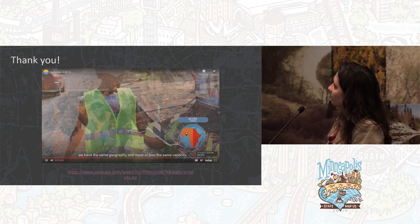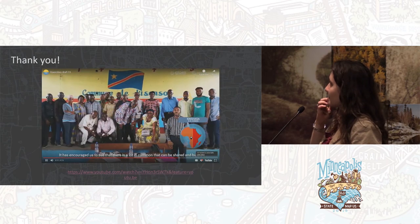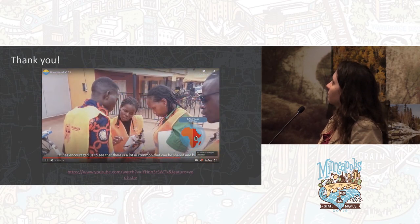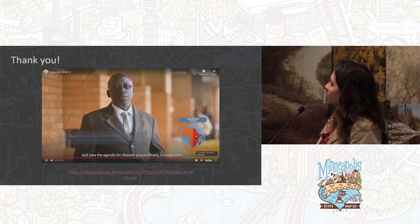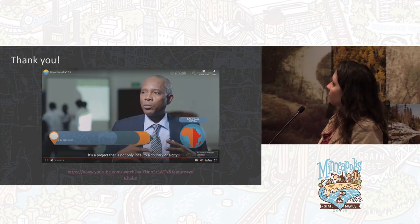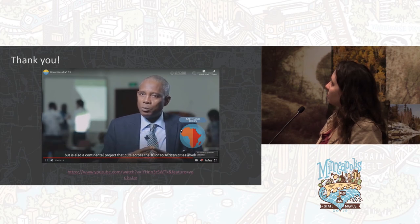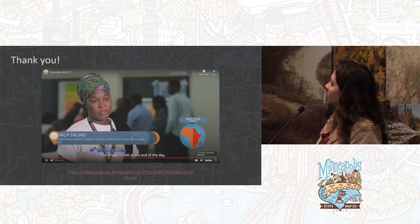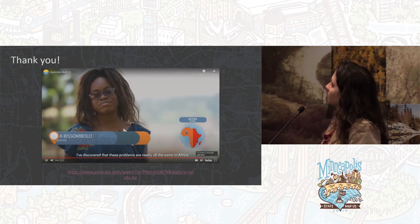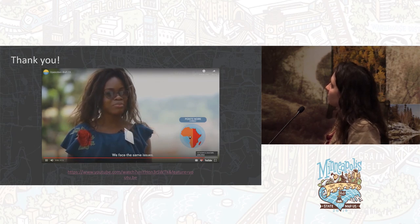We have the same geography and the same capacity. This encouraged us to see that there is much in common that can be shared. There is a lot of information we can share to do better and advance the agenda for disaster preparedness, management, prevention, and reduction. This is a project that is local — in a country, in a city — but it is also practically continental, spanning a dozen African cities. Their impact is felt at the end of the day because they were involved from day one. The problems are almost the same across Africa — they are recurring, the same everywhere.